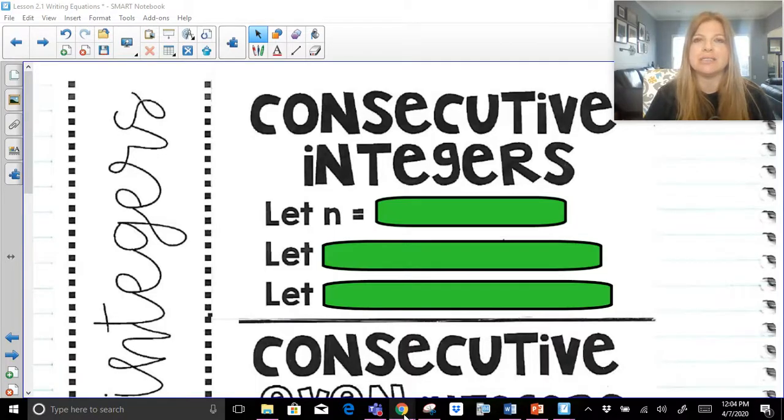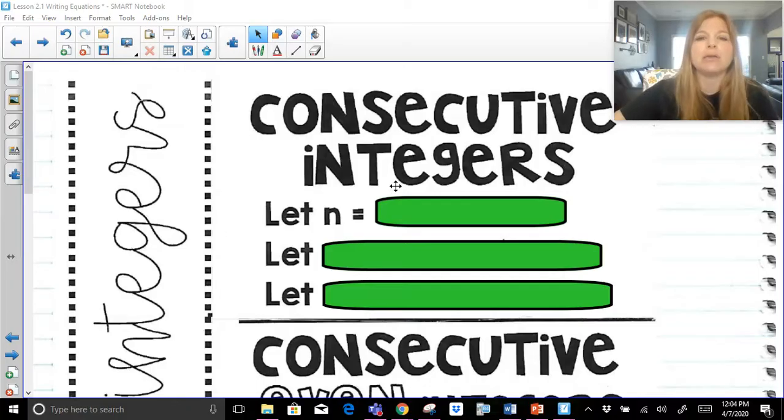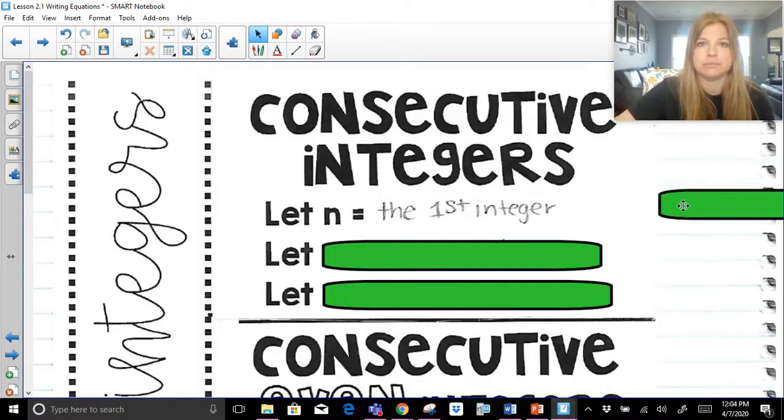So consecutive. The word consecutive means one after another. One is consecutive to two. Two is consecutive to three. Three is consecutive to four. So one after another, you don't skip anything. So I'm going to tell the reader that n, you can pick any variable, but I'm going to use n, n is going to stand for the first integer. n is going to represent the very first integer.